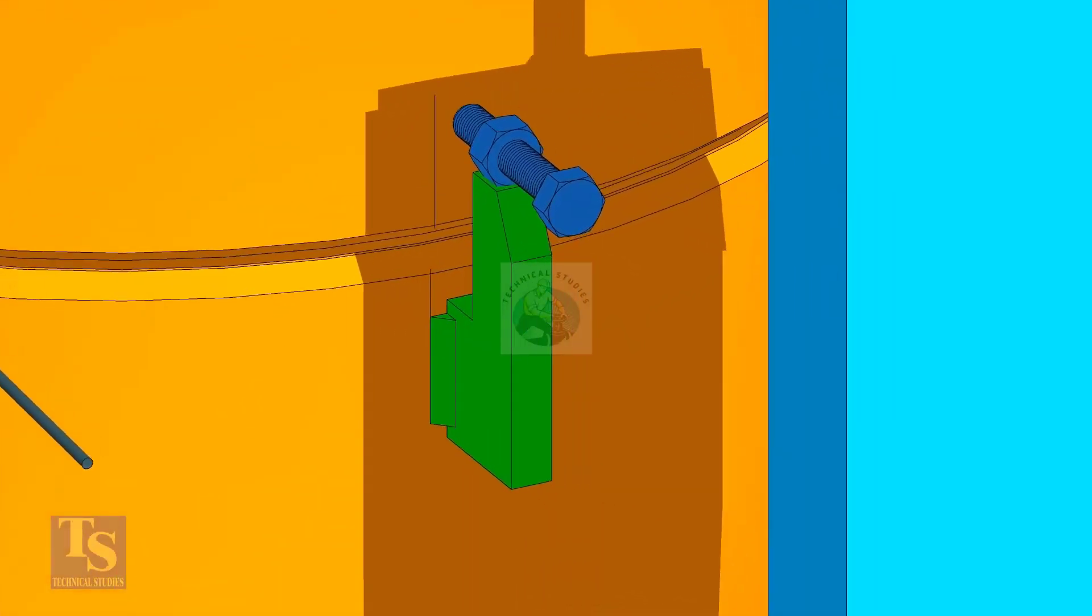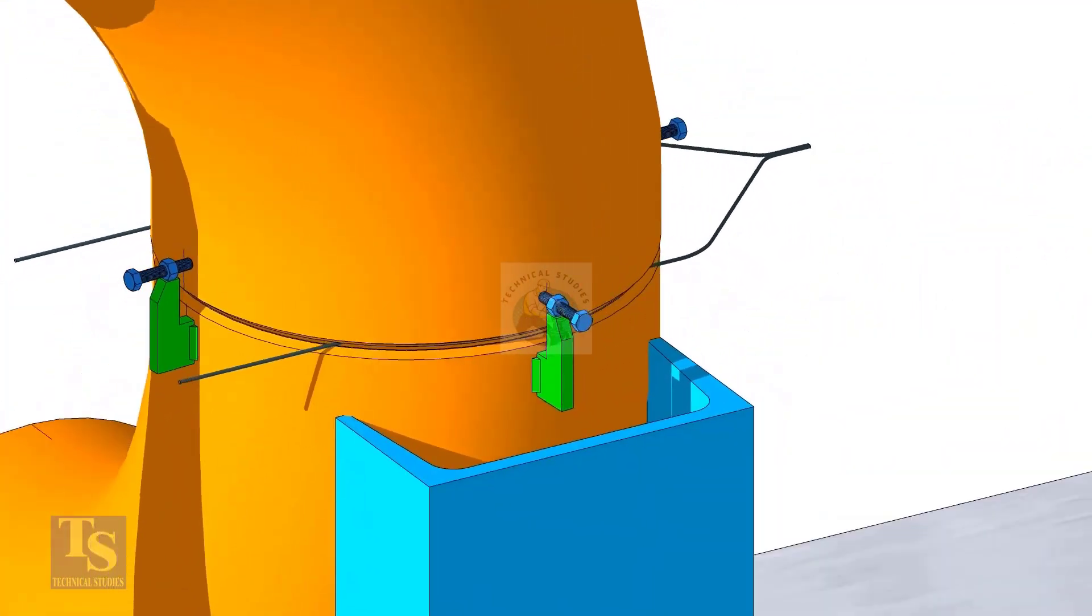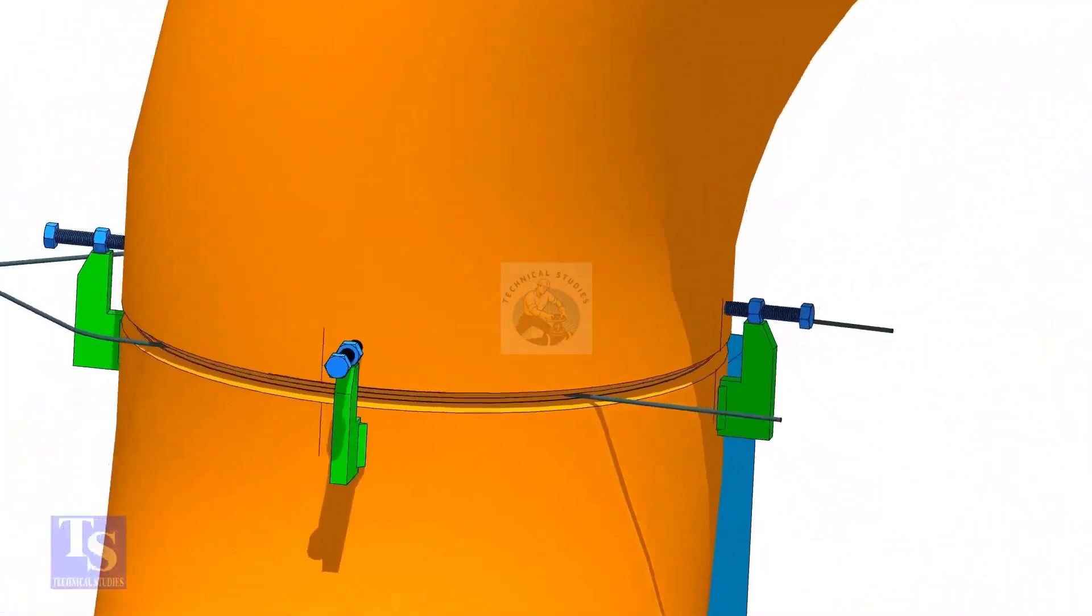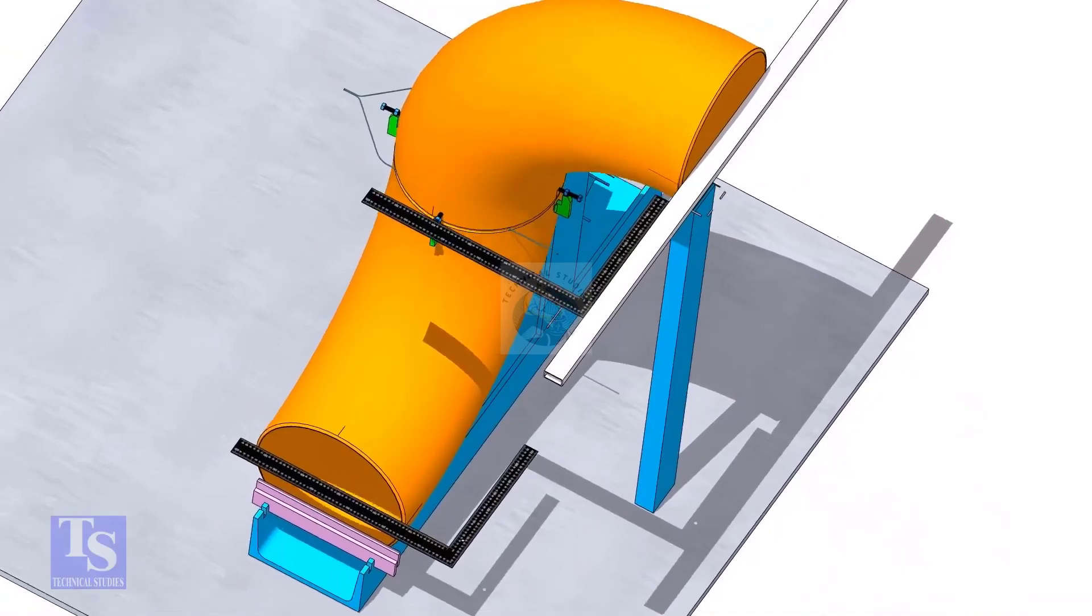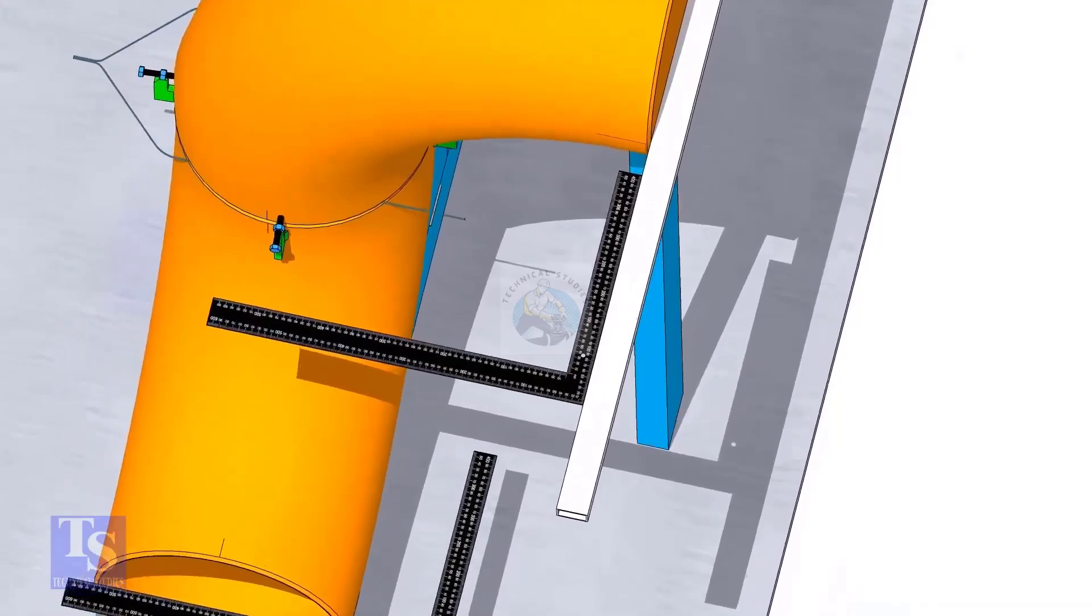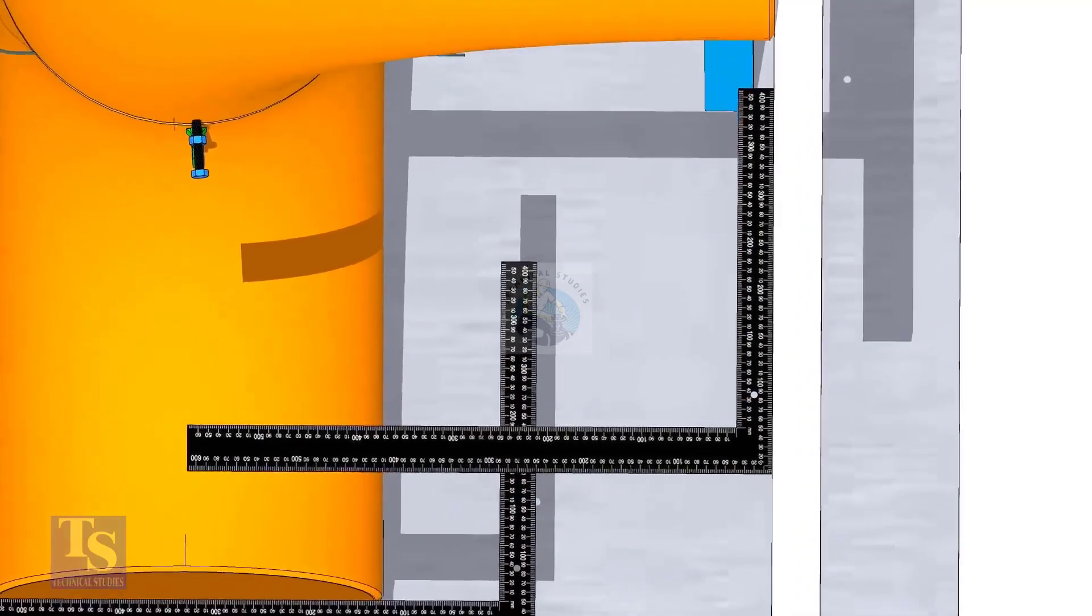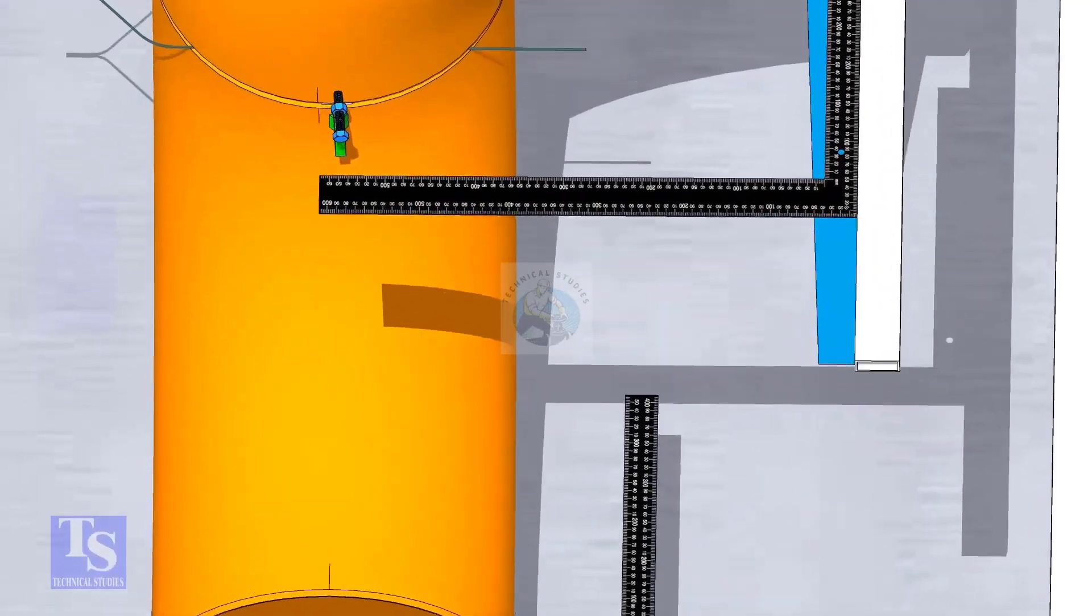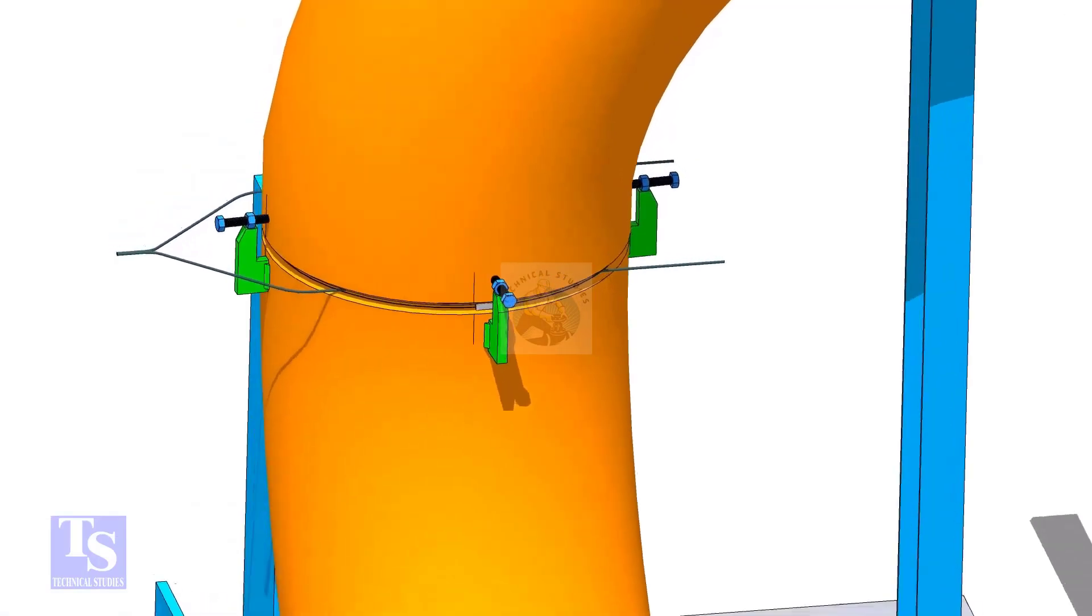Check if the gap is correct. Final check the squareness of the elbows. Tack weld on the near and the far sides of the joint as shown.